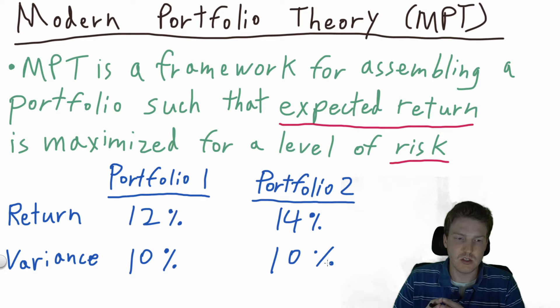Variance is typically how the risk of a portfolio is measured. So we can see that both Portfolio 1 and 2 have the same variance, but Portfolio 2 has a higher return. Modern Portfolio Theory tells us that we actually prefer Portfolio 2 in this scenario.